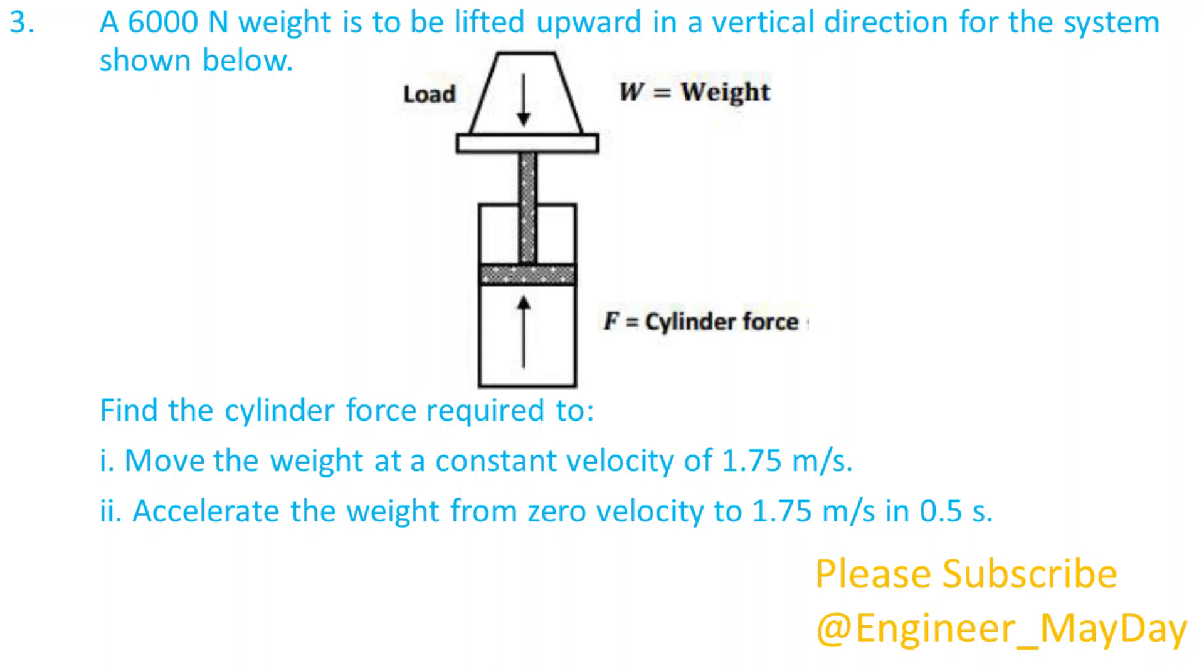Here is the last question. A 6000 newtons weight is to be lifted upward in a vertical direction for the system shown below. Find the cylinder force required to: 1. Move the weight at a constant velocity of 1.75 meters per second. 2. Accelerate the weight from zero velocity to 1.75 meters per second in 0.5 seconds.